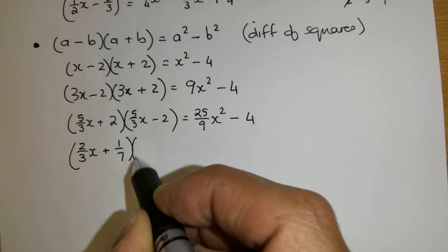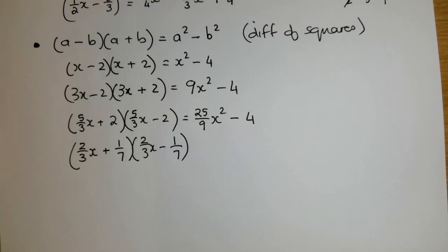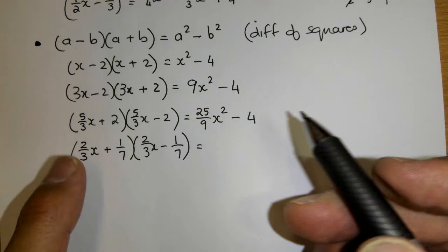Let's do the last one. 2 over 3x plus 1 over 7 multiply it by 2 over 3x minus 1 over 7. There we go. Again, those two are the same. Those two are the same. Plus, minus, same thing.